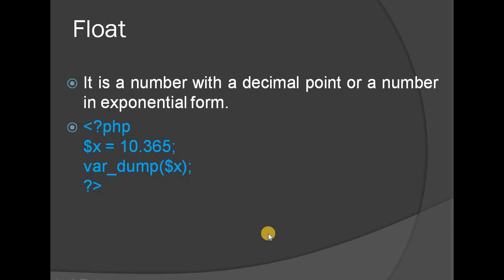The next one is float. Float data types are decimal numbers or numbers in exponential form — a number with a decimal point or in exponential form. For example, $x = 10.365.